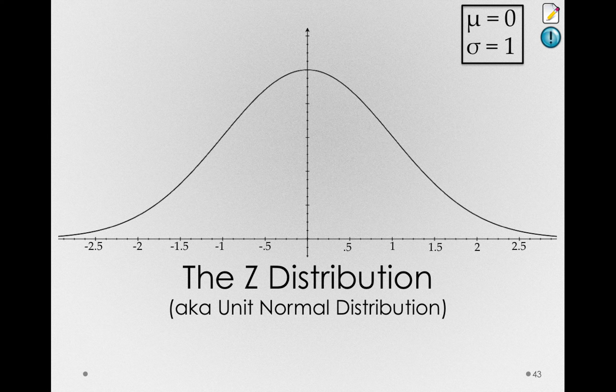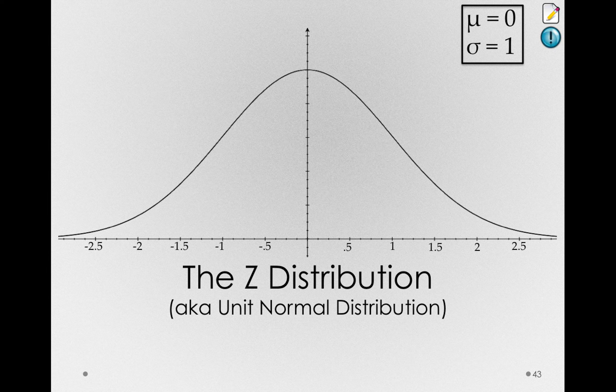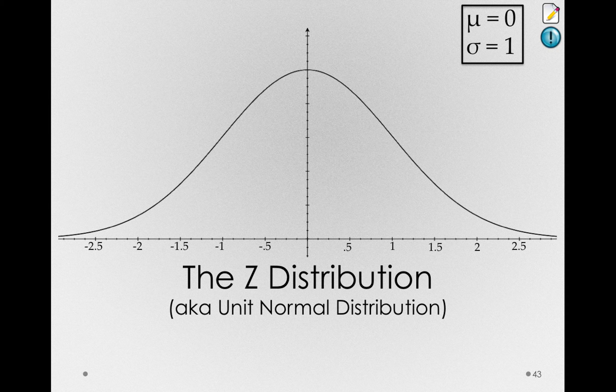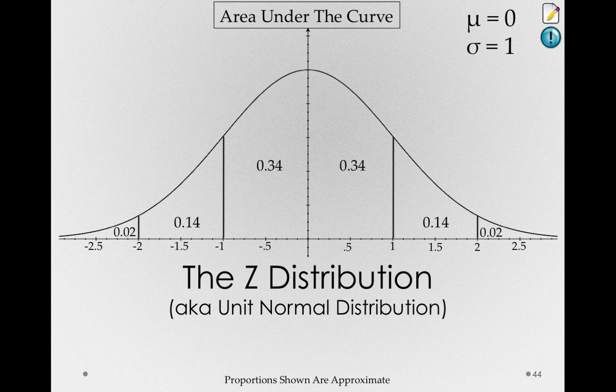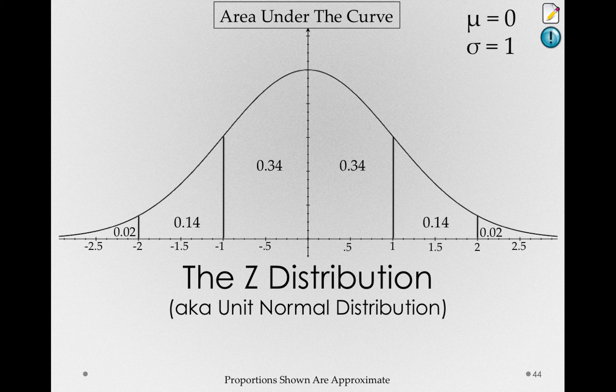As we'll see, there are very important things in statistics that are normally distributed, so it's going to be important that we know a little bit about the proportionality of this z-distribution. I'll give you some rough proportions here. Now these proportions are approximate, but give us an idea of the area under the curve.